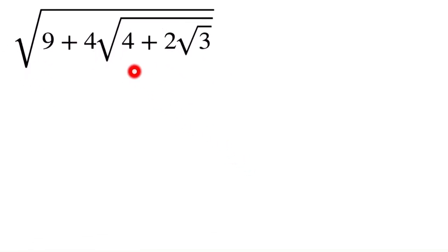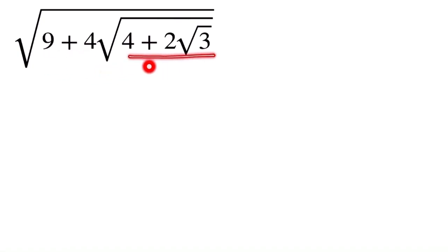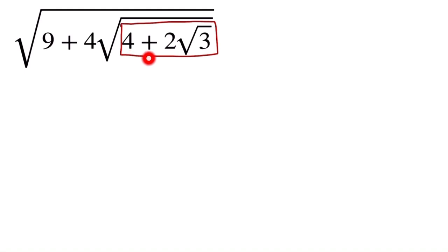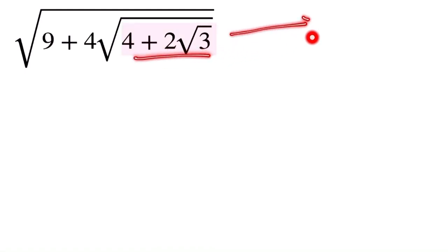Our question is: the square root of 9 plus 4 times the square root of 4 plus 2 root 3. Now we focus on the inner part of the expression: 4 plus 2 root 3.